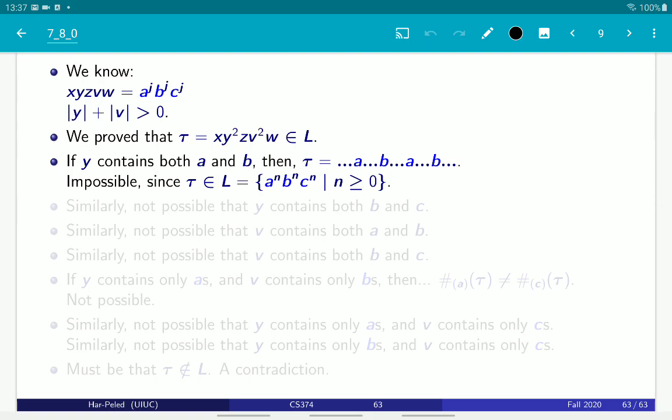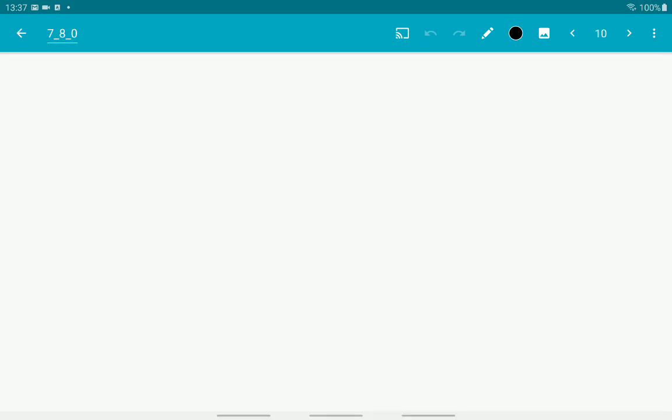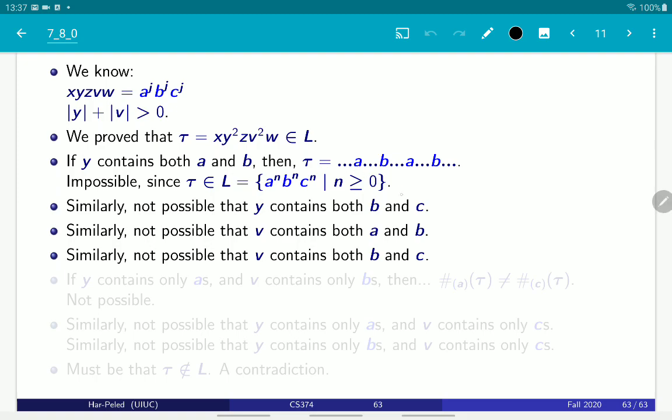And now we continue in the same fashion. Similarly, y cannot contain both b and c. By an identical argument, v cannot contain both a and b. And v cannot contain both b and c. So, y and v together must not be empty. And each one of them can contain only one kind of character. It might, y might contain a triple a or a sequence of a's, but it cannot be mixed. It has to be pure, pure repetition of some letter.